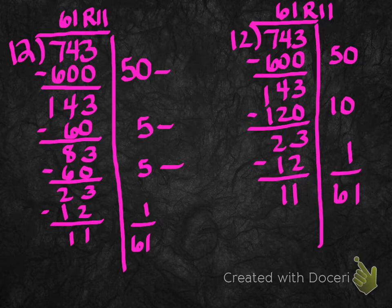And then I did 1 times 12, which is 12, and I had 11 left over. So I added up my 50, my 5, my 5, my 1. I got 61. And then moved that 61 up to the top of my division bar and moved my 11 up there because I can't take any 12s from 11. So that means I'm done dividing. So this one has a pretty big remainder of 11.